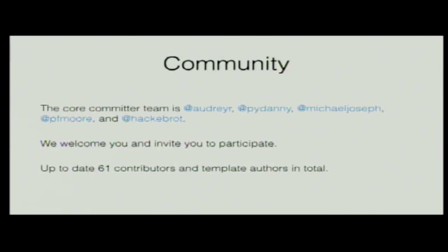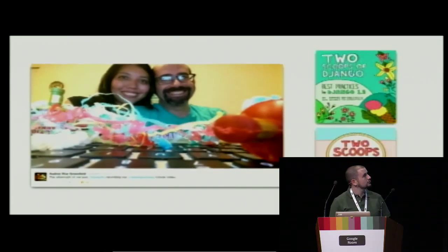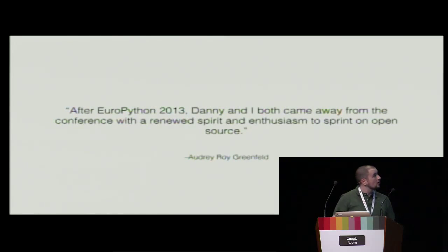About the community: we have a team of five people right now — Audrey, Daniel, Michael, Paul Moore, and myself — and we welcome everyone to participate and contribute to the code base. Up to now we are 61 contributors. Those of you working on Django might know Audrey and Daniel — they are the authors of Two Scoops of Django and just recently published the new version targeting Django 1.8.